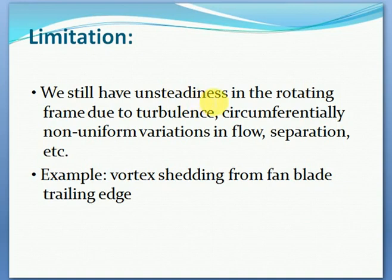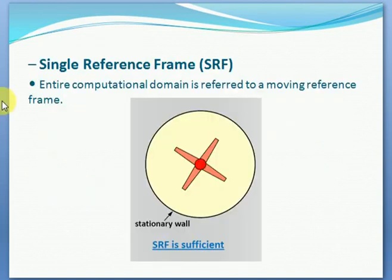There are some limitations of this rotating reference frame. We still have unsteadiness in the rotating frame due to turbulence in the flow field, circumferential non-uniform variation in the flow, and separation — for example, vortex shedding from fan blade trailing edges. That is why we do not get an accurate simulation in those cases.